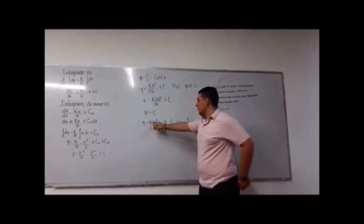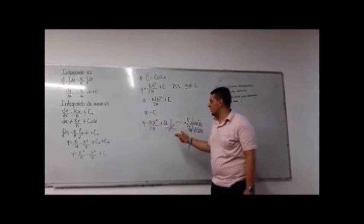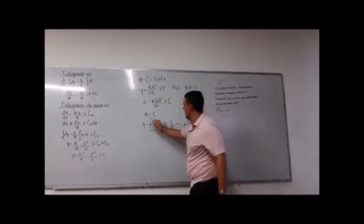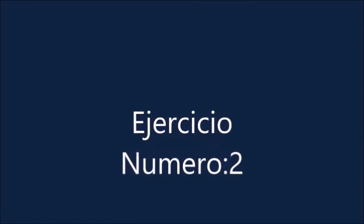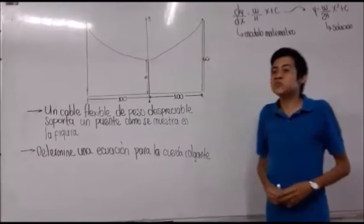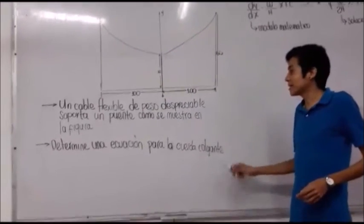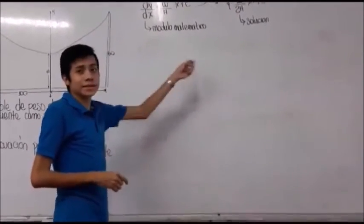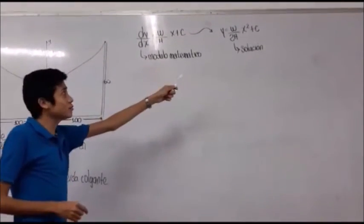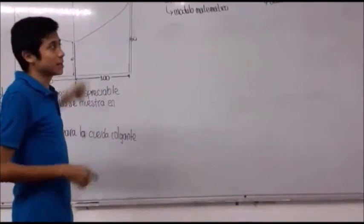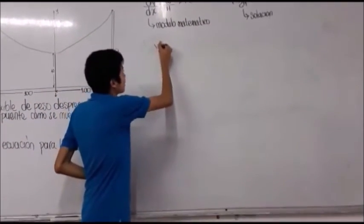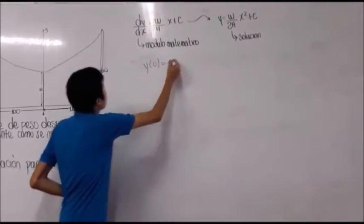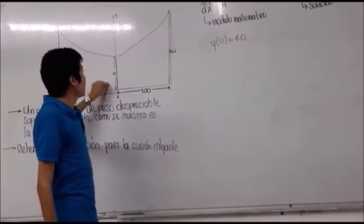Entonces y es igual a K por x al cuadrado sobre 2H más A. Aplicando la condición inicial y(0) igual a 40, que es la altura mínima de la curva en el eje Y, obtenemos la solución particular.